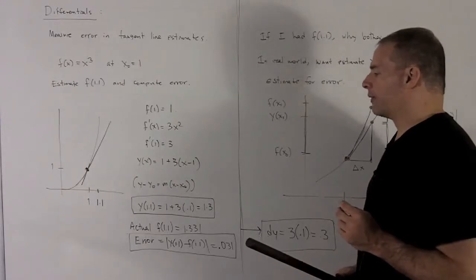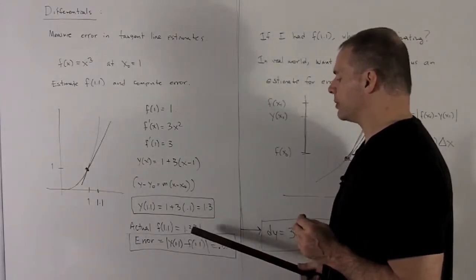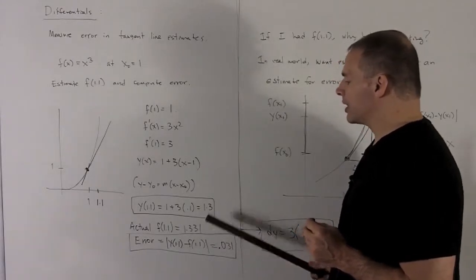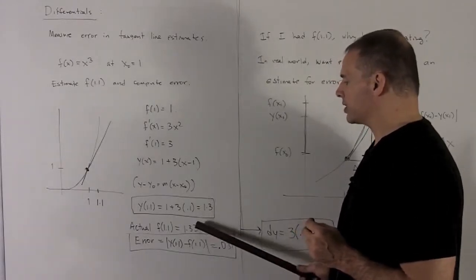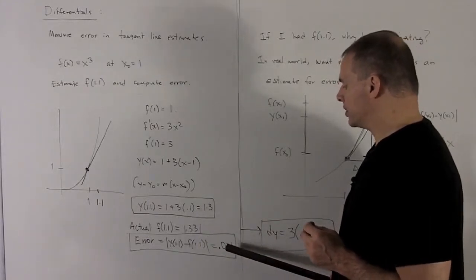Let's see how bad we are from the actual value. If I put this into a calculator, 1.1 cubed gives me 1.331. So we notice that the difference between this number and this number, the actual value and the tangent line estimate, gives me 0.031.